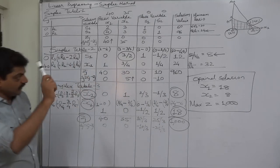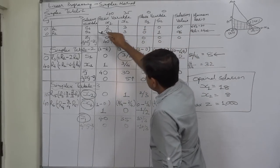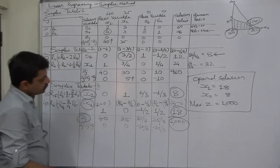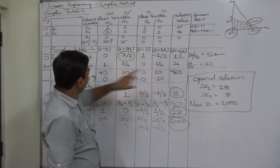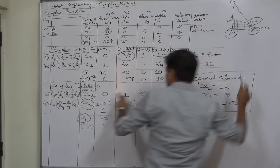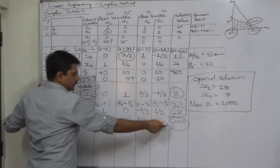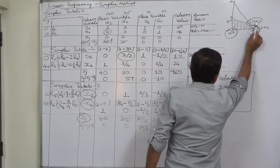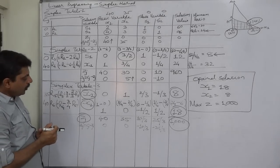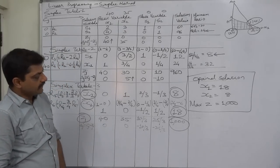Comparing the simplex method with the graphic method: in the first table, and in the second table, the solution was x1 = 24, x2 = 0, Z = 960, which lies at point C in the graph. At the end of the third simplex table, we found x1 = 18, x2 = 8, Z = 1000, which lies at corner point B. Since all delta J values are 0 or negative, this is the optimal solution.